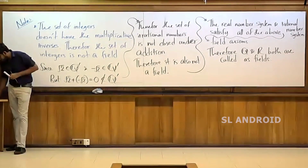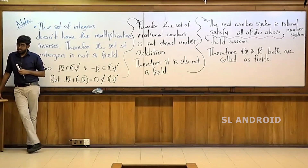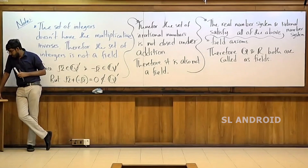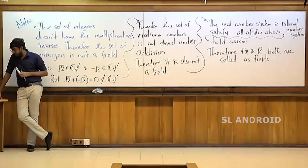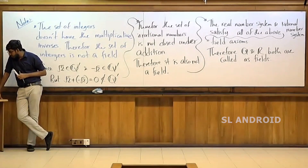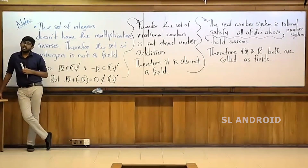For all a, b in S, exactly one of: a less than b, a equal b, or a greater than b is true.